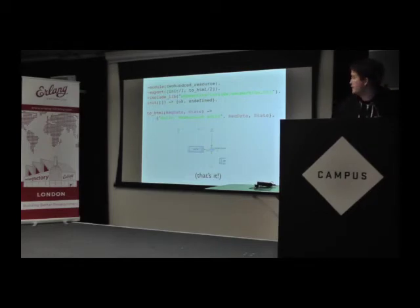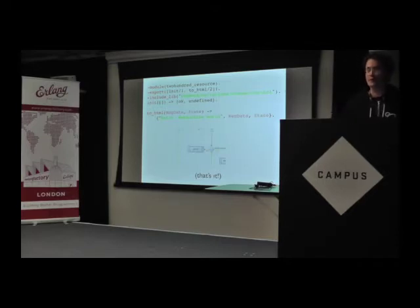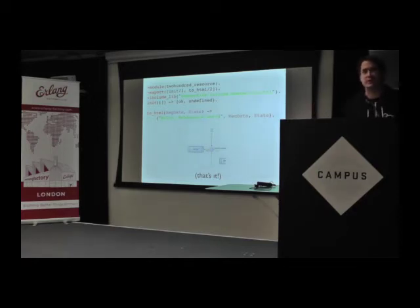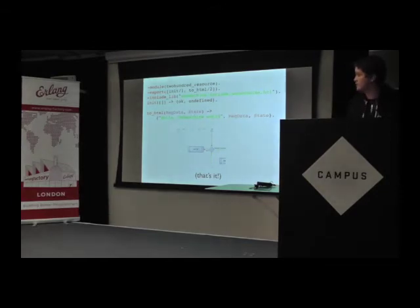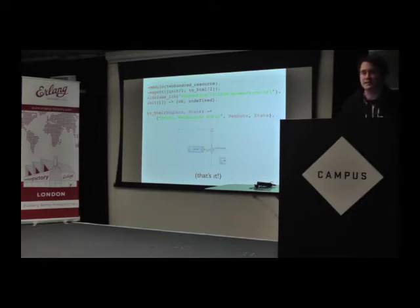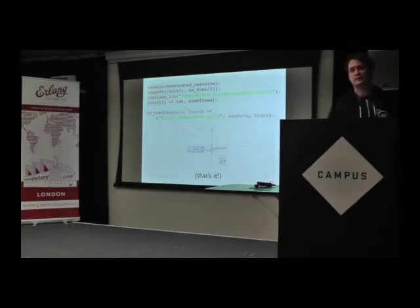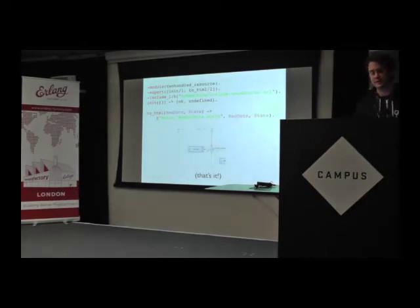Here's an example of exactly what it takes to write your first Web Machine resource — it's about four lines of boilerplate code. The first four lines are just declaring the module, exporting which functions are allowed to be called, including the library for Web Machine, and starting it up. The last two lines are just what it takes to give you a 200 OK with a body that says Hello World. Pretty incredible to write four lines of code and not have to re-implement the entire HTTP spec.